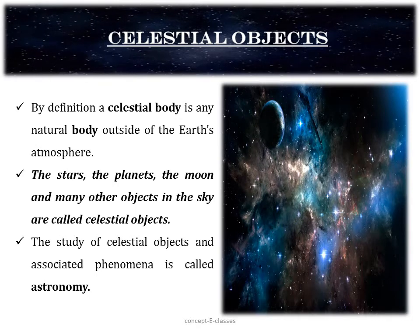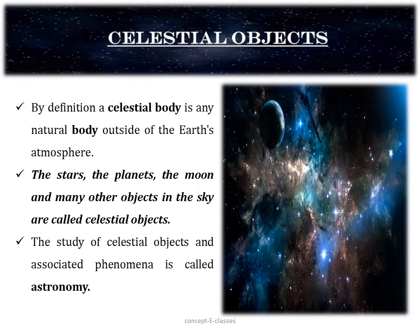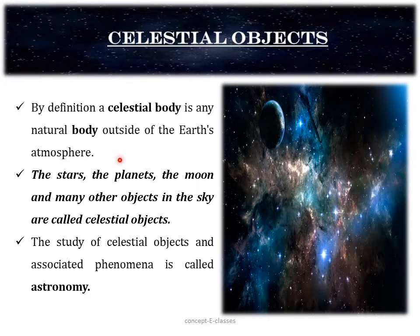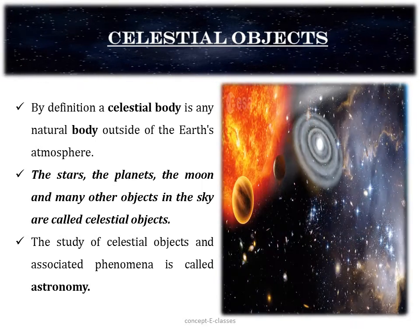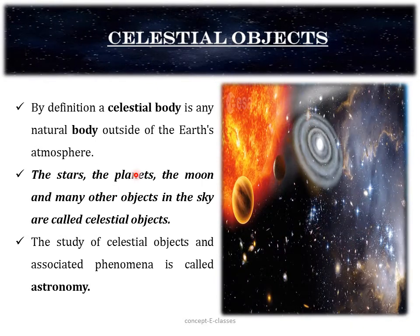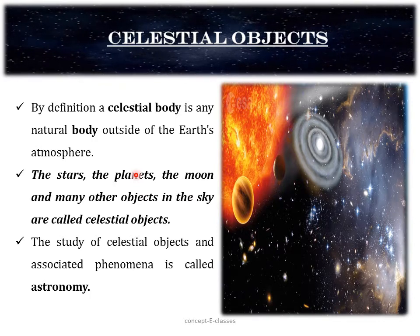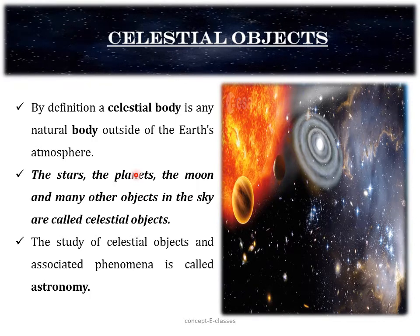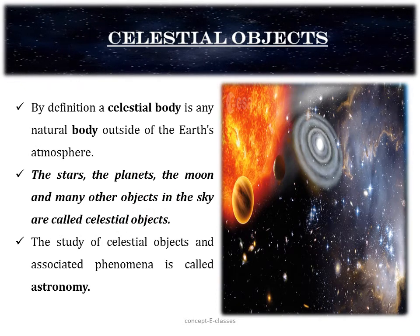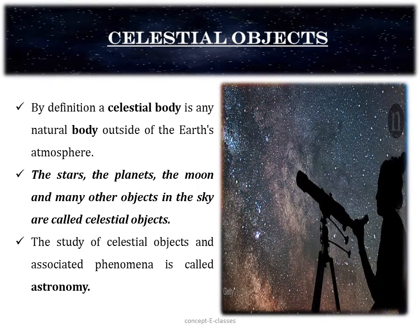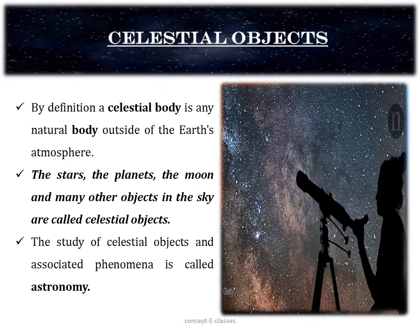The first topic of this chapter is celestial objects. A celestial object is a natural body outside of the earth's atmosphere. The stars, the planets, the moon, and many other objects in the sky like asteroids, meteors, comets, etc., which are outside the earth's atmosphere, are called celestial objects.